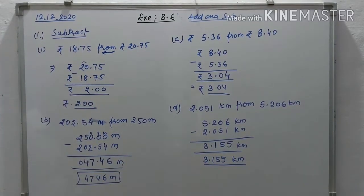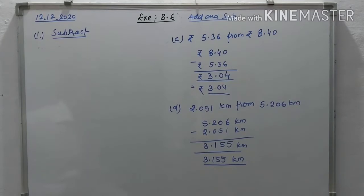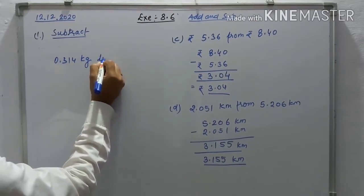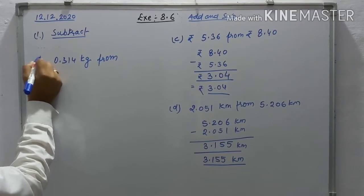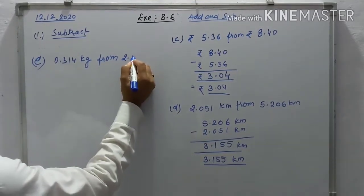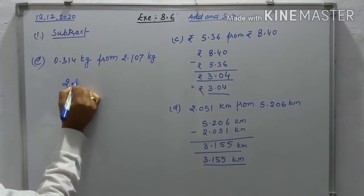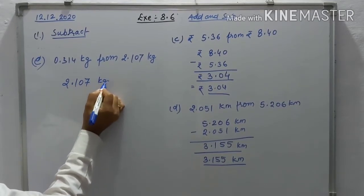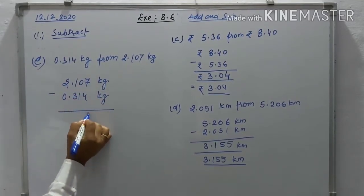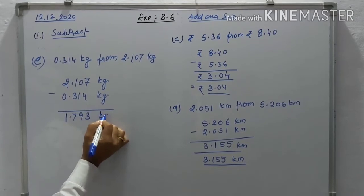Question (e): subtract 0.314 kg from 2.107 kg. Write 2.107 minus 0.314. Subtracting: 4, 3, 9, 7 — carry — point 1 — the answer is 1.793 kg.